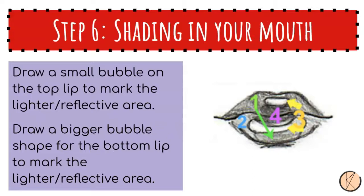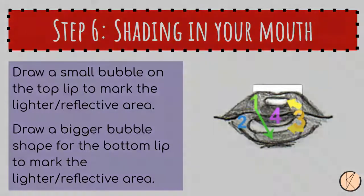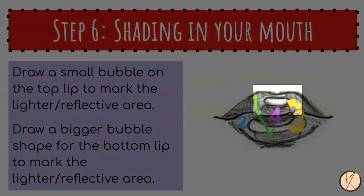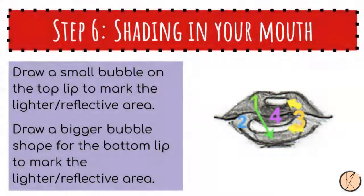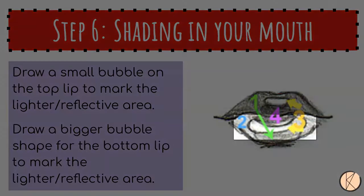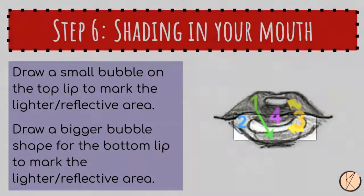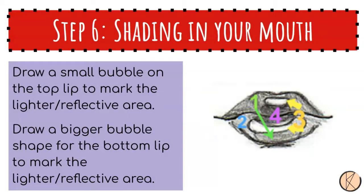Now we are going to look at shading in the mouth. Draw a small bubble on the top lip and then draw a bigger bubble for the bottom lip. This will guide us in where the lighter or reflective areas of the mouth will be.